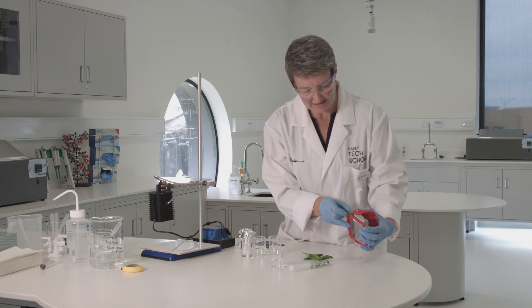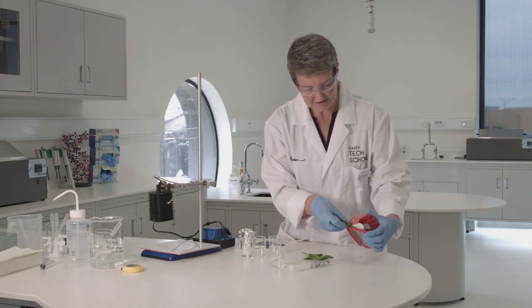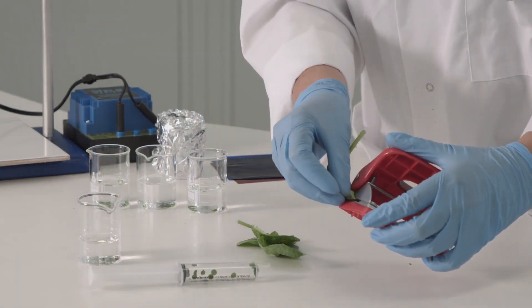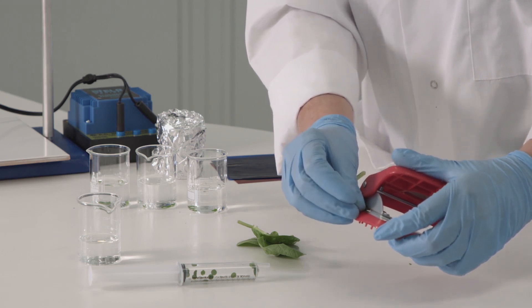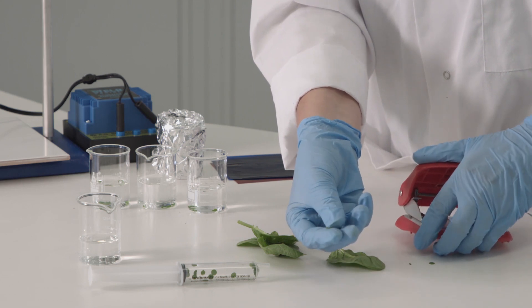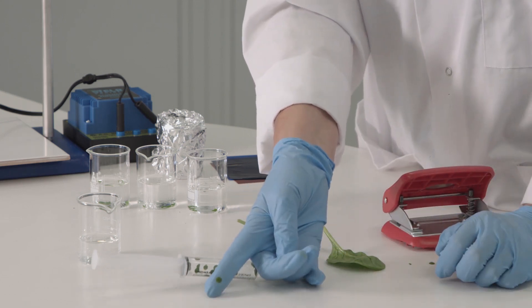So it should be a clean hole punch and I just feed it in underneath and then press down and what I get is a leaf disk like that.